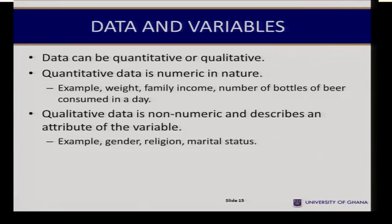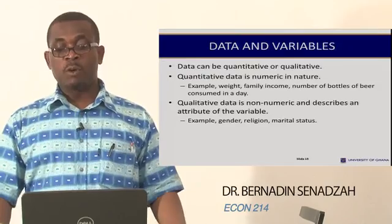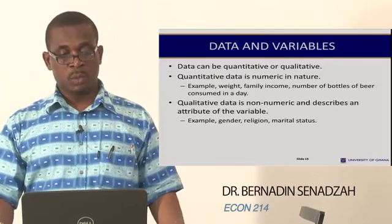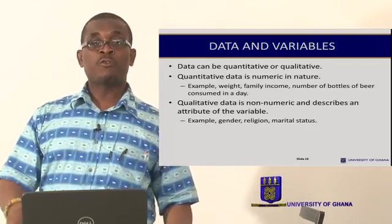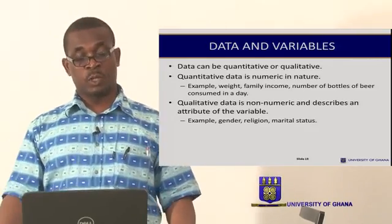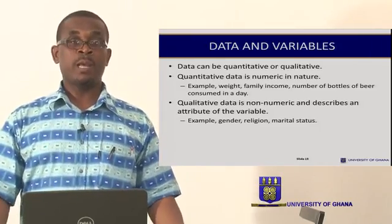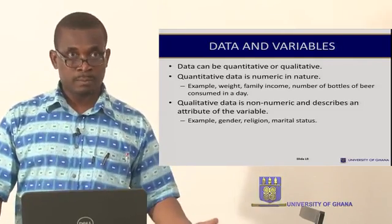Data can be quantitative or qualitative. Quantitative data is numeric in nature — for example, the weight of a person, the income earned by families, the number of bottles of beer consumed in a day. Qualitative data, on the other hand, provides or describes an attribute of the data, so it is non-numeric. For example, gender — you are either male or female — religion, marital status: married, single, etc.